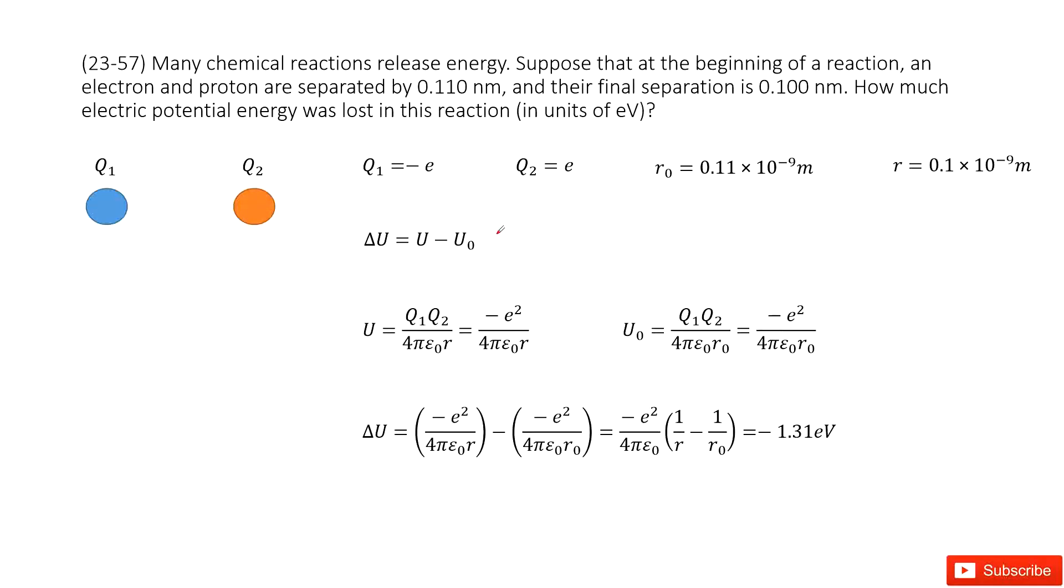Now this looks like we need to find the electric potential energy change. So we can use the energy change delta U equal to final energy minus initial energy. Now, can you find the electric energy between two point charges? Yes.